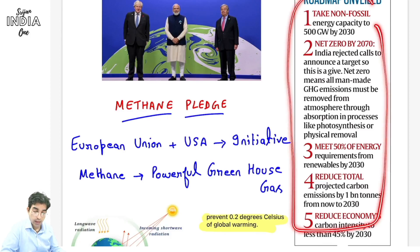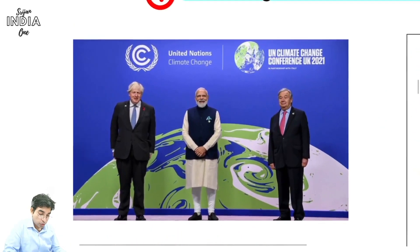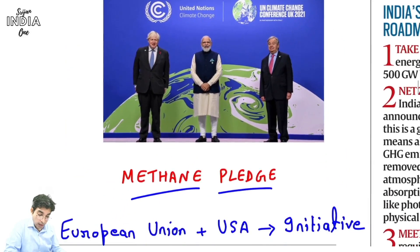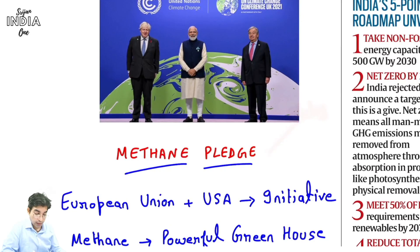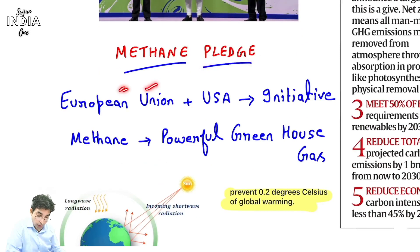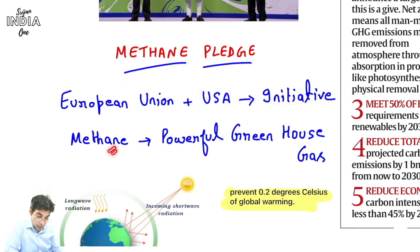The 5 pillars are: take non-fossil fuel, net zero by 2070, 50% of energy from renewables, reduce total carbon emission, and reduce economy's carbon intensity - yeh way of action hoga. In addition, the United Nations Climate Change Conference UK mein hua Glasgow mein. Is meeting mein kuch aur doosri pledges bhi li gayi, jaise ki methane ki pledge - yeh liya European Union aur USA ne, in dono ka initiative hai.